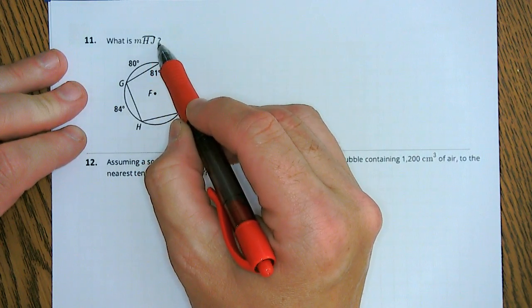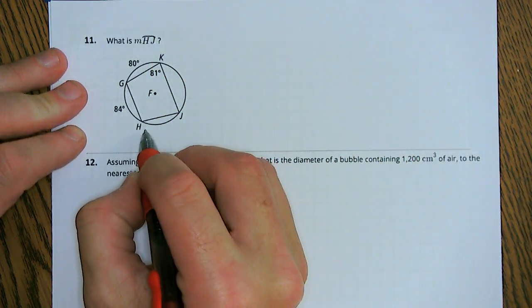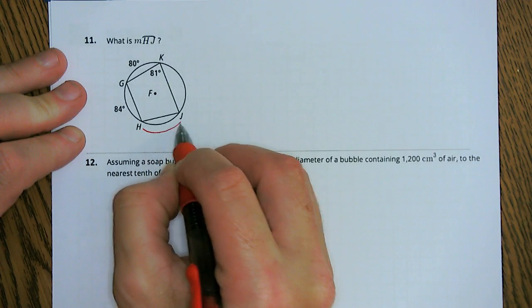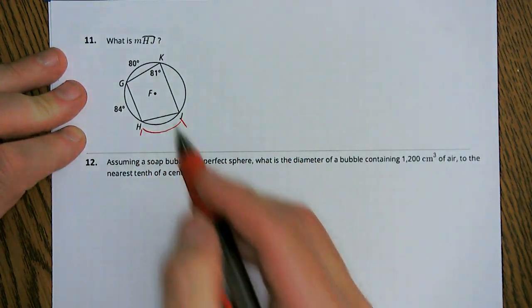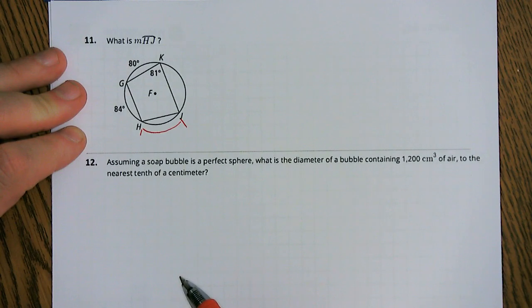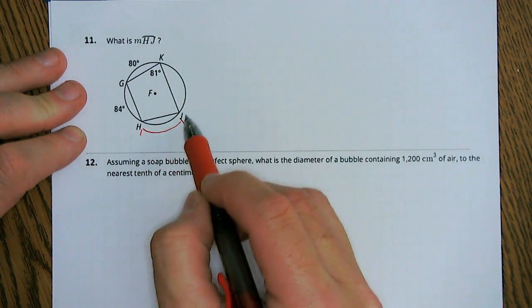What is the measure of arc HJ? Well, arc HJ is this arc between H and J, and it's the minor arc because there's only two letters. So we're looking for this arc here.